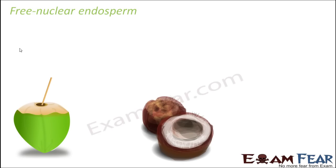Now let us see how exactly the development of endosperm takes place. Most commonly, the type of endosperm which is developed is known as the free nuclear endosperm. To understand this, I will take the example of the coconut, which all of you are familiar with.